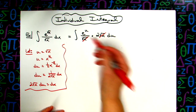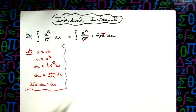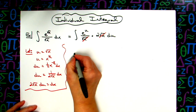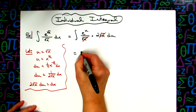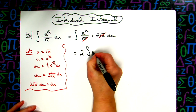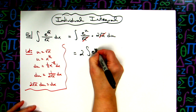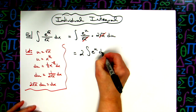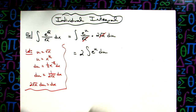So when those square root of x's cancel out, I can pull the 2 out in front. I'll have 2 times the integral of e to the u du. Which is what I needed — I needed to get down to just the integral of e to the u so that I can integrate that.